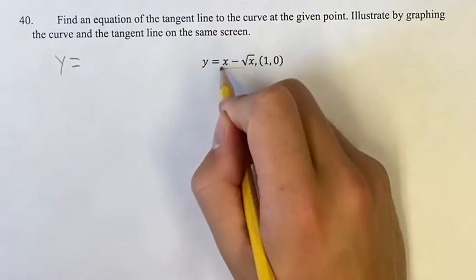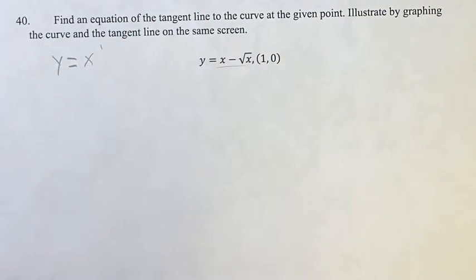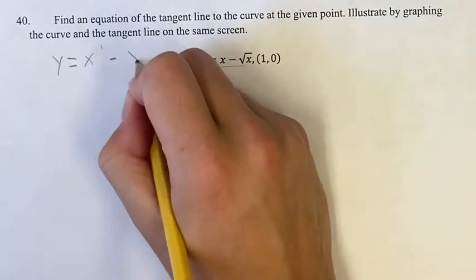So we're going to have y is equal to, and then x we can think of as just x to the 1. We're going to get it into the form of a power function as we're normally used to it. And then minus the square root of x is just x to the 1 half.